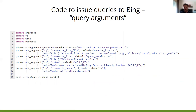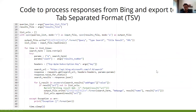Now I will briefly explain the code with an example. Here you can see the arguments that the script takes: the number of results, the key for Microsoft Azure, and the query lists. Then you can see the code to process the response from Bing Search API and export to tab-separated format. Here you can also see the request to Bing Search API with a JSON, and the process to check the results.